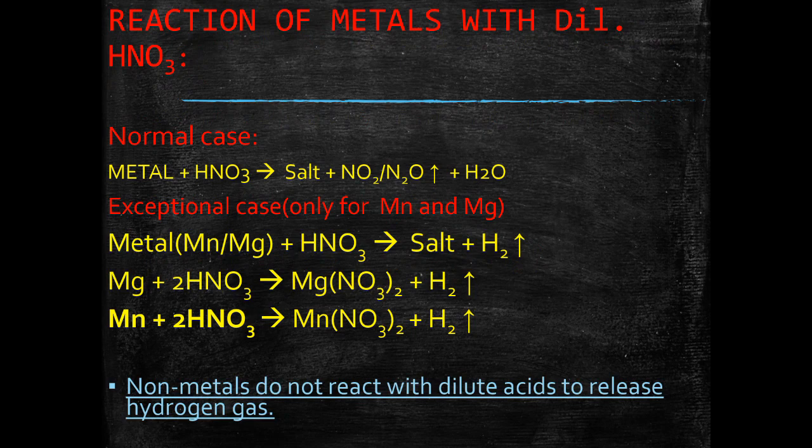When magnesium reacts with nitric acid, it gives magnesium nitrate Mg(NO3)2 with hydrogen gas. Similarly, when manganese reacts with nitric acid, it gives manganese nitrate and hydrogen gas. Nonmetals do not react with dilute acids to release hydrogen gas.